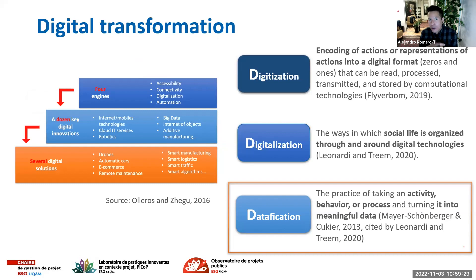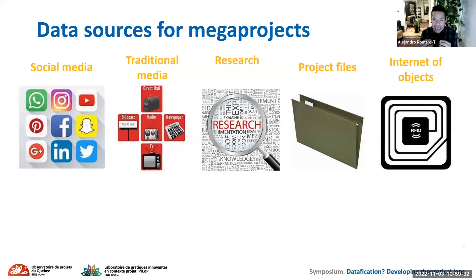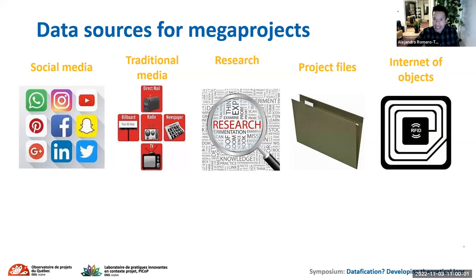I will present some examples of data we can have in a mega project or a public project. We have traditional data that comes from the project owner and the project contractor — all the project files — including data about planning, controlling the project, and decisions. With digital transformation, we can also introduce Internet of Things with sensors to supervise and monitor what is happening in the project and collect data to make better decisions.